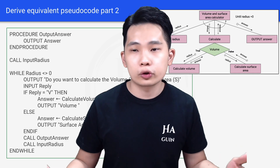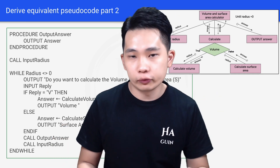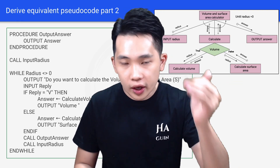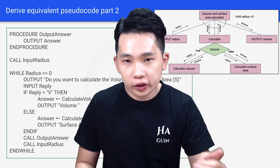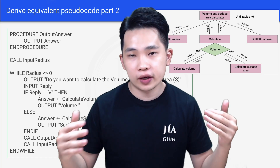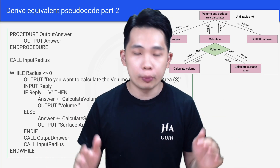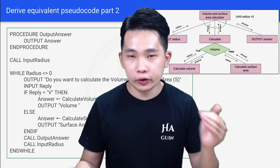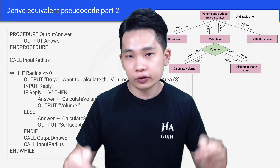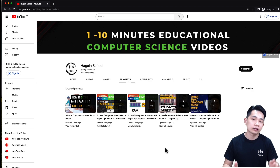This is how we can derive pseudocode from a structure chart. It might be confusing at first — just pause the video, scroll back to part one, go through slowly, then come back to part two and refer back to the structure chart. I hope you have a better understanding of structure charts after this video. If you're taking A-level Computer Science, feel free to check out my video playlist split by chapters or papers in the video description below, or go to youtube.com/@HaguinSchool and click on playlist.